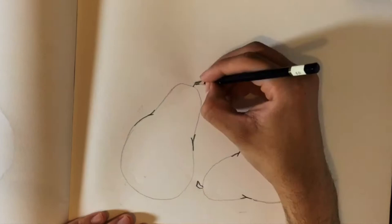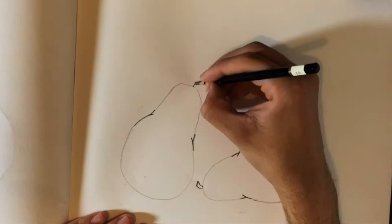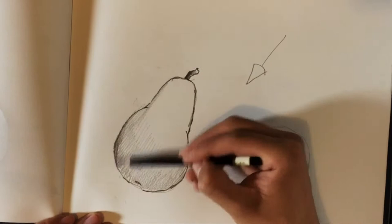Emphasizing these points gives form and volume to the pear and takes away the flatness. Good, now that we're done with that, we're going to add a light source and shadows to show that the pears are not floating in space.